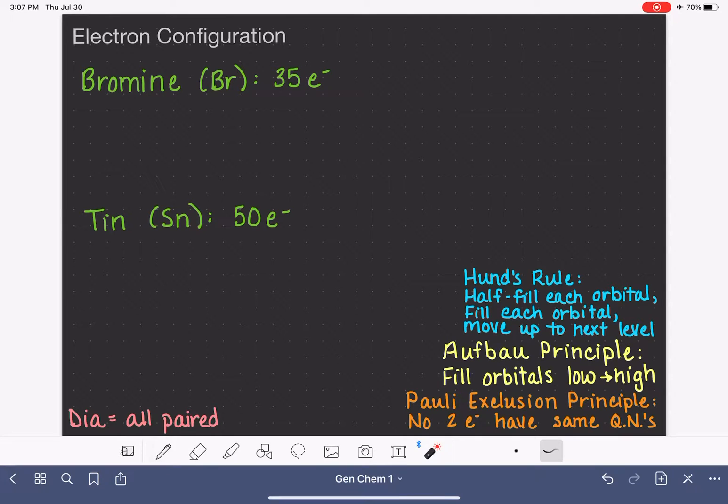In this video, I'm going to show you how to write electron configurations for larger atoms, such as bromine or tin. I'm going to introduce you to a few new things. I'm going to teach you something called the noble gas abbreviation, which abbreviates an electron configuration even further. I'm also going to teach you how to read electron configurations straight off the periodic table, so we don't need to write out energy diagrams anymore.